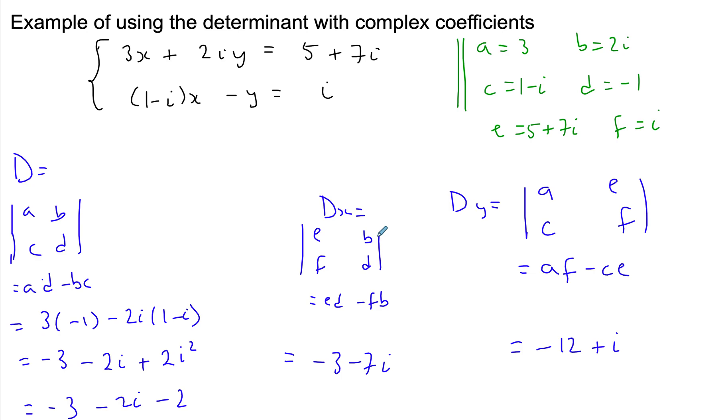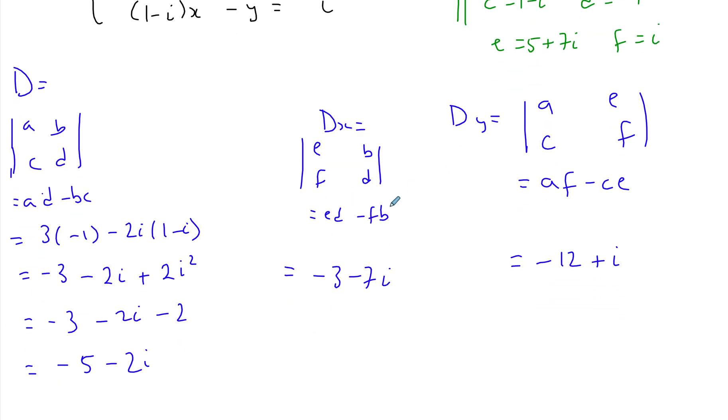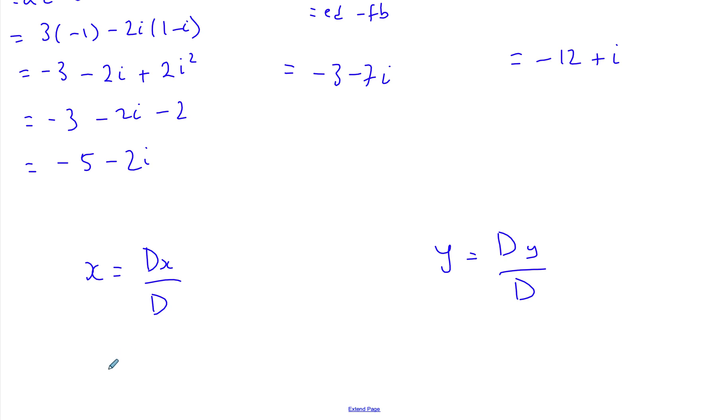Apologies if I accidentally use the word discriminant - I do mean determinant throughout the whole video. So x is going to be -3 - 7i divided by -5 - 2i.